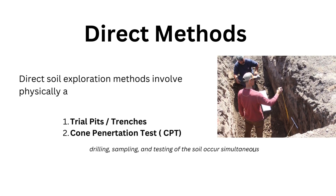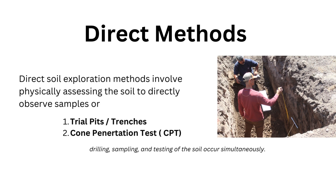Direct soil exploration methods involve physically assessing the soil to directly observe the sample or conduct tests. The two main direct methods discussed in this video will be the trial pit method and the cone penetration test or CPT. The major processes in soil exploration are drilling, sampling, and testing of the soil samples. Under a direct soil exploration method, all three procedures are conducted simultaneously.